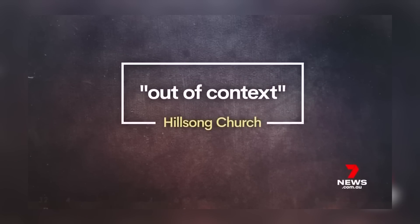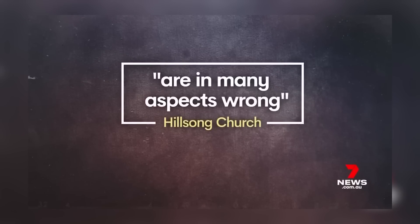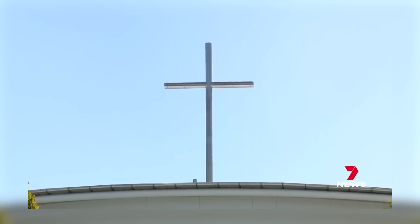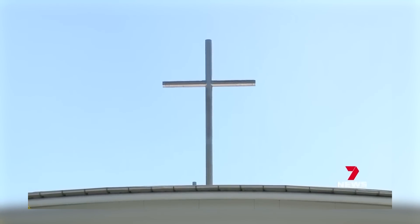The documents also revealing Hillsong earns $80 million more in Australian annual income than it reports publicly. The MP says the files, which he's verified, were offered to the tax office and the Securities and Investments Commission last year, but not acted on. Labelling that a failure of regulatory oversight. Hillsong says the claims are out of context and in many respects wrong. Saying it's under new leadership and is a different church now than it was a year ago.